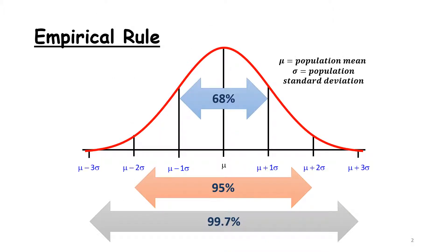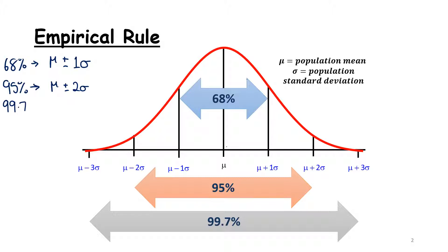The empirical rule has three individual statements. The first is that 68% of the data sits between one standard deviation either side of the mean — that is mu plus or minus one standard deviation. The second is that 95% sits between plus or minus two standard deviations. The third is that 99.7% of the data sits between plus or minus three standard deviations — nearly all the data — with just 0.3% outside, which is 0.15% in either tail.